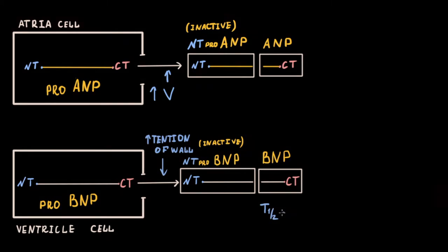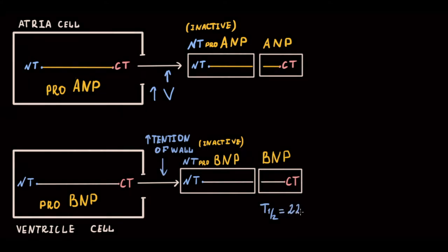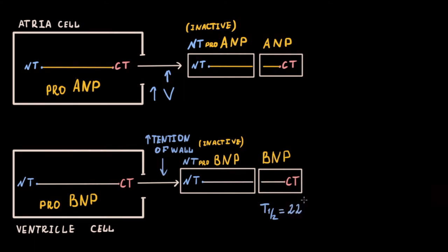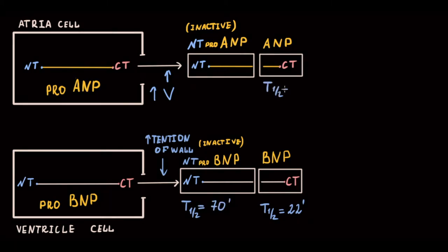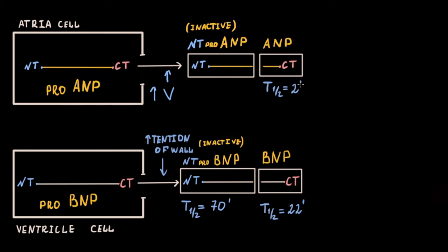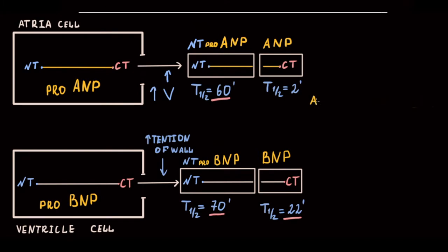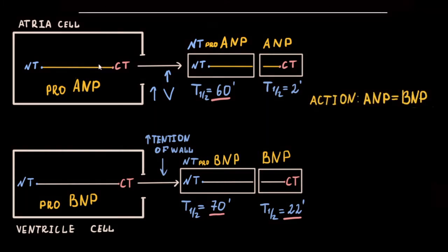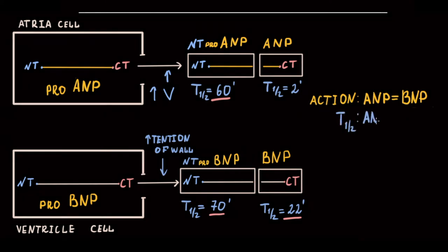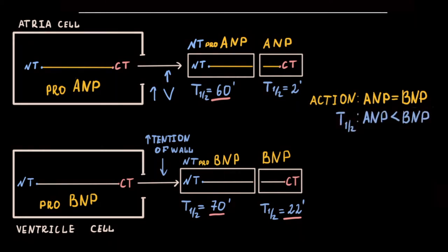The half-life of natriuretic peptides is the time needed to reduce plasma peptide concentration by half. BNP half-life is 22 minutes, NT-proBNP is 70 minutes, ANP has a shorter half-life of only 2 minutes, and NT-proANP is 60 minutes. Both ANP and BNP have the same physiologic action but different half-lives. Going forward, we will use only ANP, but remember that BNP has a similar action.